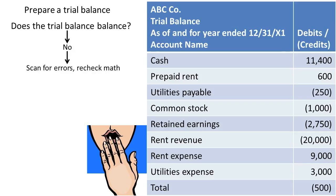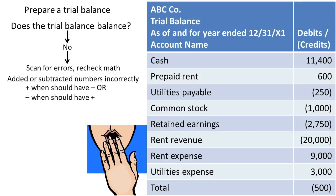We should probably scan these numbers for errors and recheck our math. If you were to do that, you might recognize that you've added or subtracted numbers incorrectly, added when you should have subtracted, or subtracted when you should have added. If you get out your calculator and reprove these numbers, you'll actually realize that negative $500 was flat out wrong — we just added the numbers up incorrectly.